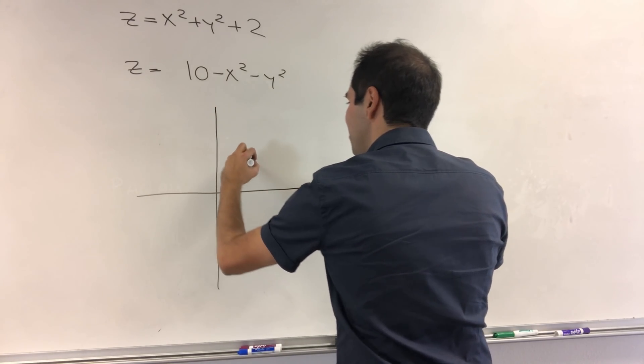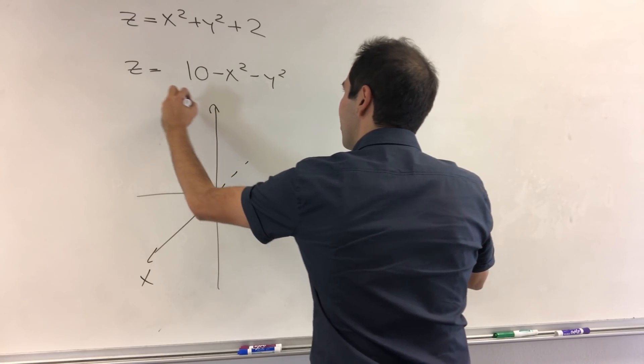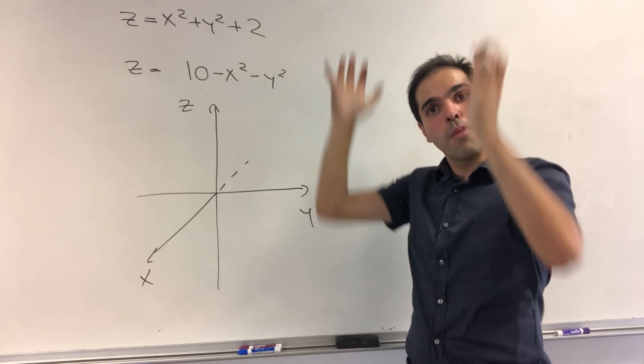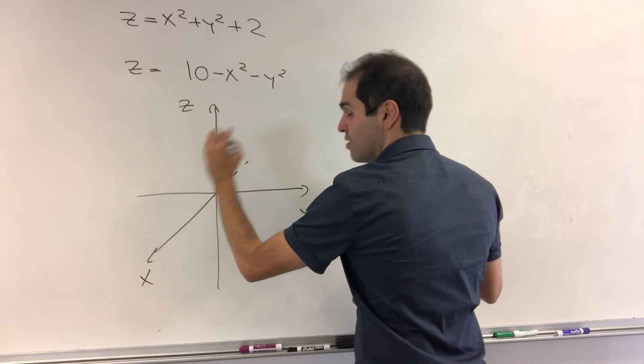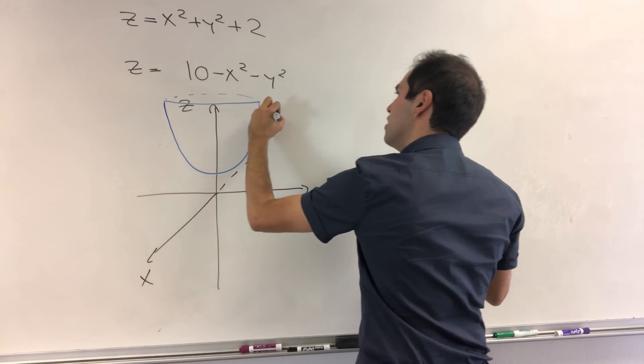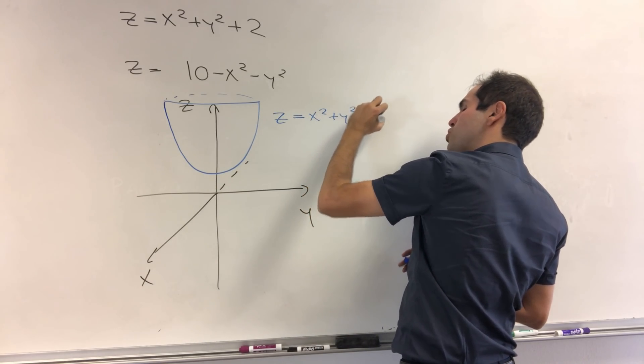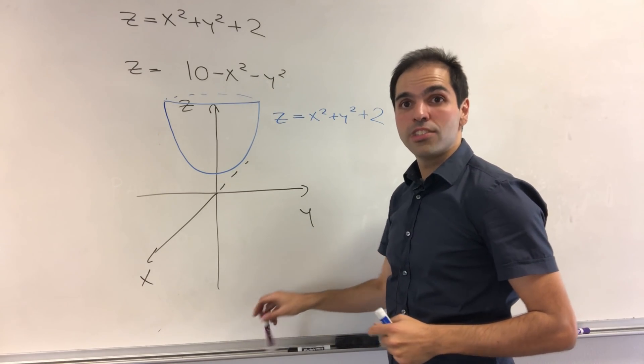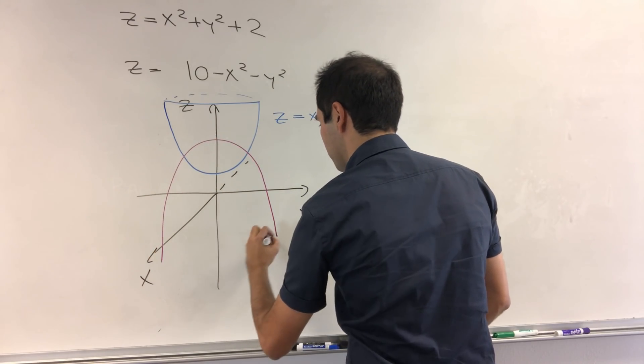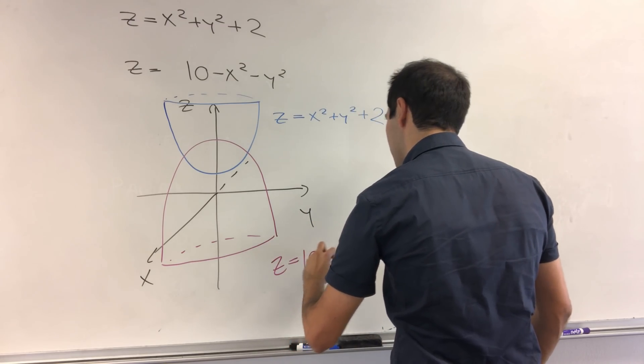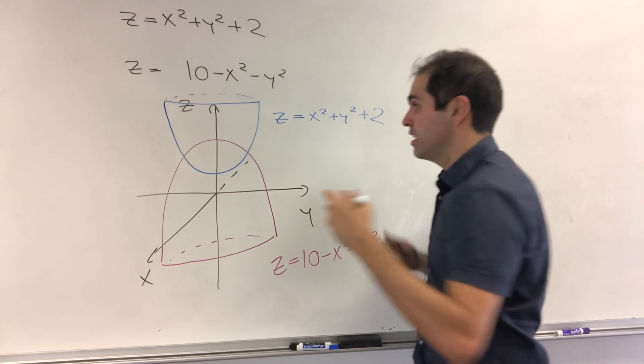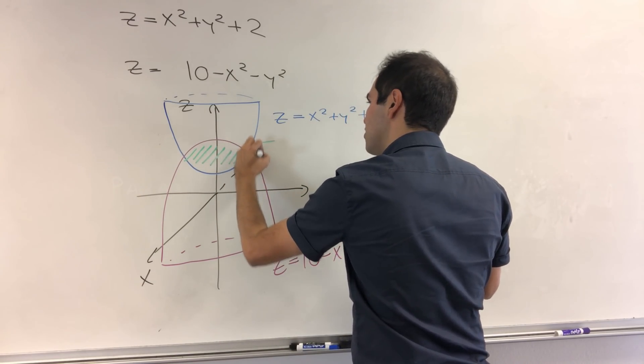Okay, so here's the x, y, z plane. And what do we want to draw? We want to draw, first of all, x squared plus y squared plus 2, which is a paraboloid shifted up by two units. And so let's draw it in color, and you'll see why. So this is z equals x squared plus y squared plus 2. And on the other hand, 10 minus x squared minus y squared, that is the upside down paraboloid. Perhaps like that. Z equals 10 minus x squared minus y squared.